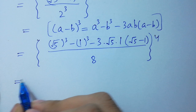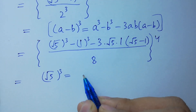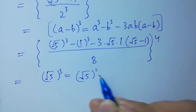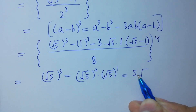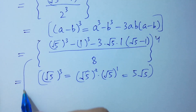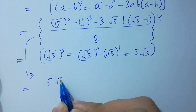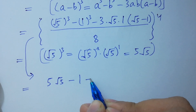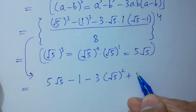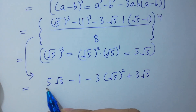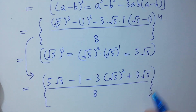Square root of 5 cubed equals square root of 5 squared times square root of 5 to the power 1; the square cancels from the square root giving 5 square root of 5. So it equals 5√5 minus 1 minus 3 times 5 plus 3√5, over 8, to the whole power 4.